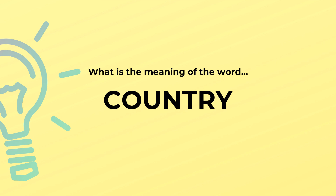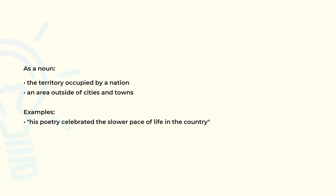What is the meaning of the word 'country'? As a noun: the territory occupied by a nation; an area outside of cities and towns. Examples of use: his poetry celebrated the slower pace of life in the country.